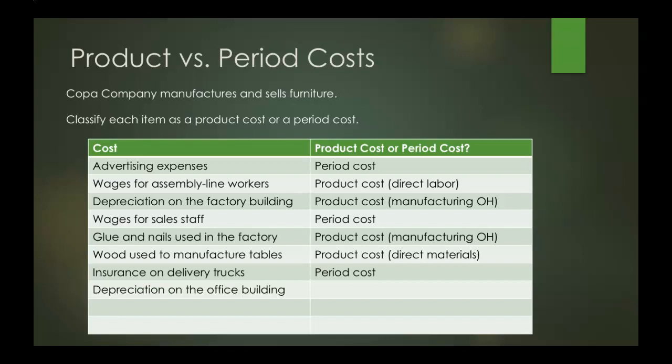Depreciation on the office building. If we look back at the earlier example, that was depreciation on the factory building, and I said it was important that it was on the factory. Here we can see depreciation on the office building is going to be a period cost, because it's not part of the manufacturing process.